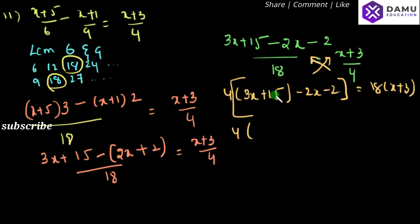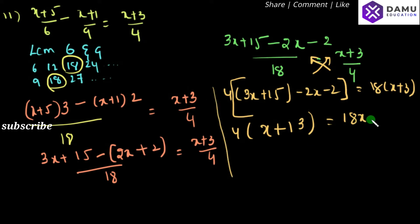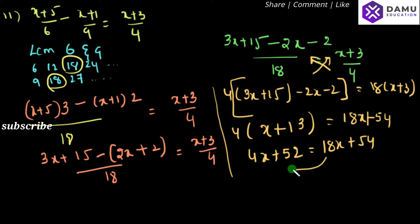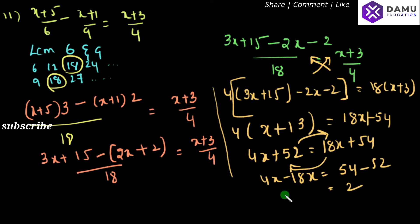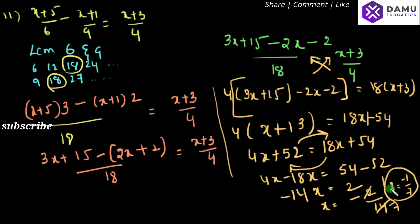So, 4 into 3x plus 15 minus 2x minus 2 will be equal to 18 into x plus 3. Simplify: 3x minus 2x is x, and 15 minus 2 is plus 13. So, 4 into x plus 13 is 4x plus 52, will be equal to 18x plus 54. Shift variables left and constants right. So, 4x minus 18x equals 54 minus 52, giving 2. That is minus 14x equals 2. So, x will be equal to minus 1 by 7.